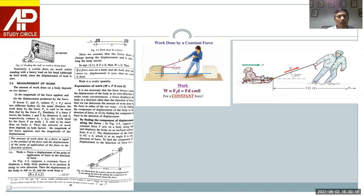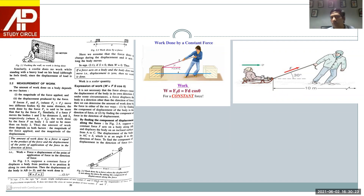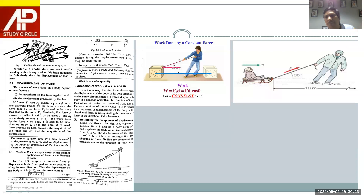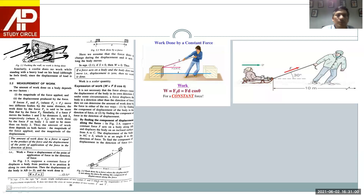A coolie does no work while standing with a heavy load on his head, since the displacement of the load is zero. Similarly, if you go and push a heavy boulder or a stone and you are not able to move it from its place, no work is done — however much force you apply. The wall is not moving from its place although the man is applying force with all his might; the force is not sufficient to move the wall, so no work is done on the wall.